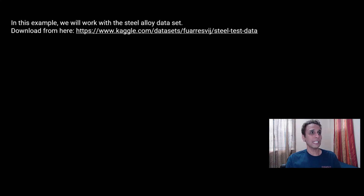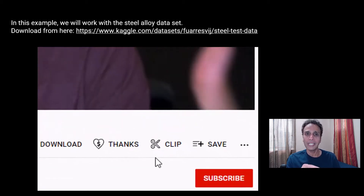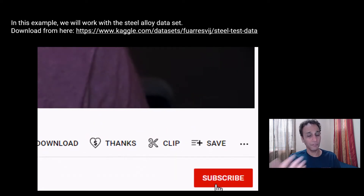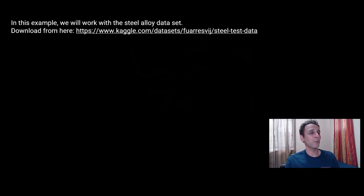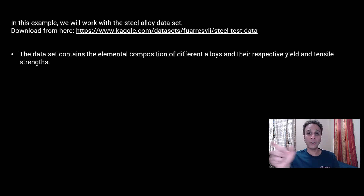For this exercise we are going to use a steel dataset. It's not a thousand images — it's just a CSV file you can download. It contains the elemental composition of different alloys: alloy 1, alloy 2, alloy 3, with different compositions and the actual lab-measured yield strength and tensile strength. A machine learning model can be trained on this data to predict the strength of an alloy for a given chemical composition.